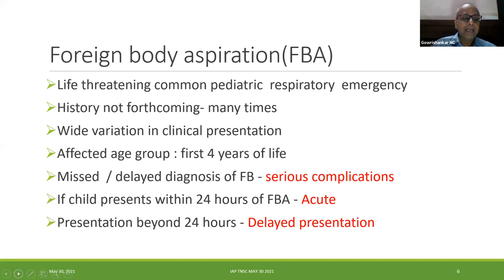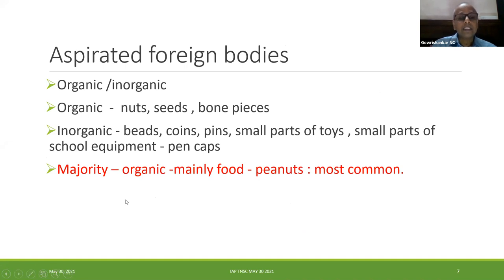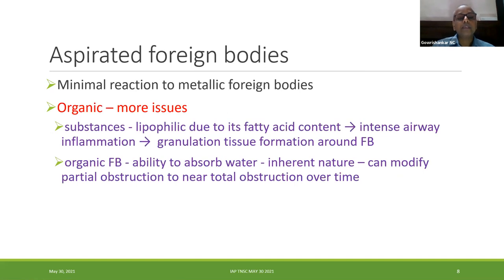If the child presents within 24 hours of foreign body aspiration, we term this as an acute foreign body aspiration. Any presentation beyond 24 hours we term as a delayed presentation. The aspirated foreign bodies can be organic or inorganic. Organic means nuts, seeds, bone pieces, whereas inorganic means beads, coins, pins, small parts of plastic toys, school equipment including pen caps.